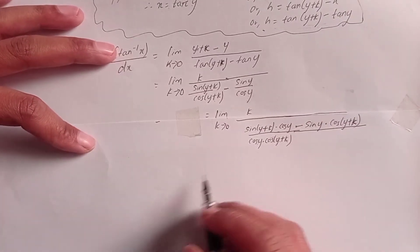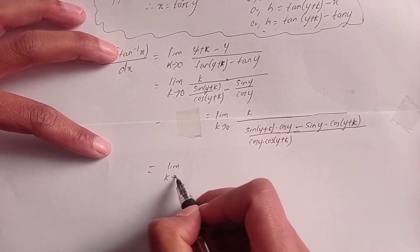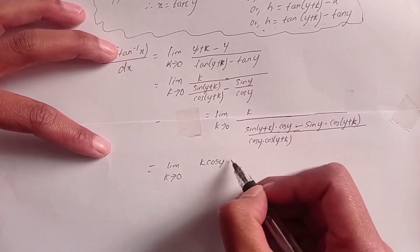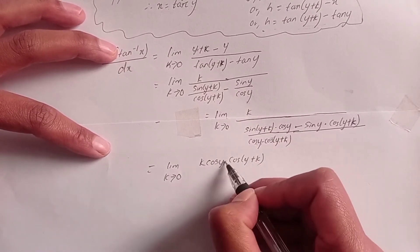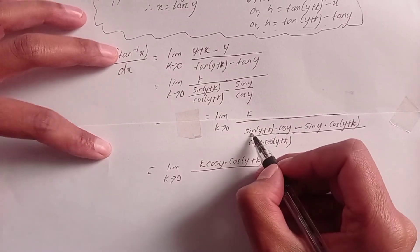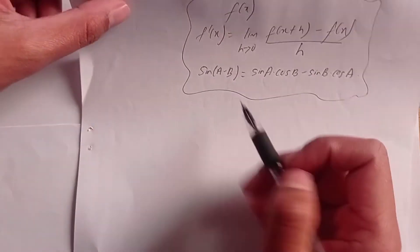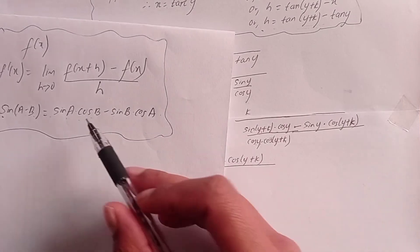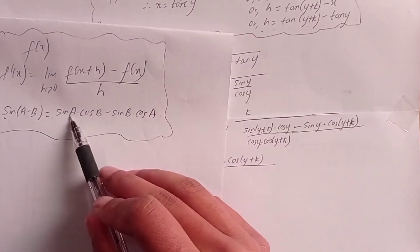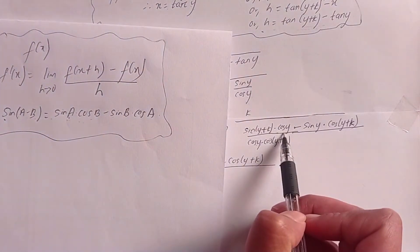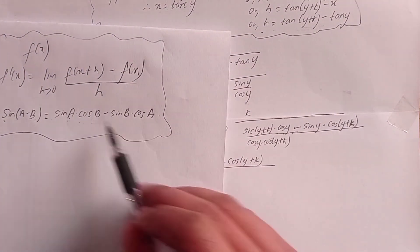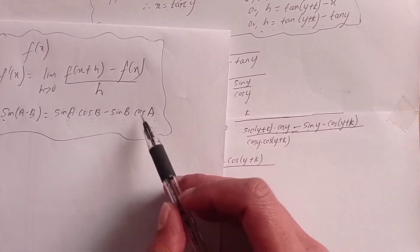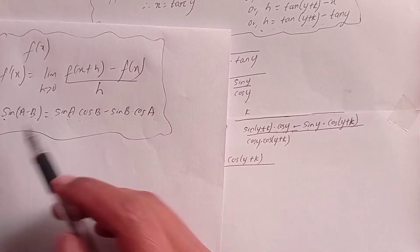Taking the reciprocal, the limit k tends to 0 gives cos y dot cos(y+k) in the numerator. Now looking at the numerator: sin(y+k) dot cos y minus sin y dot cos(y+k) — comparing with sin(a minus b) equals sin a dot cos b minus sin b dot cos a, this equals sin((y+k) minus y).